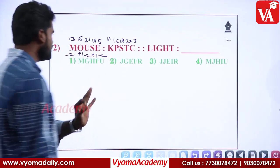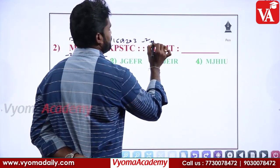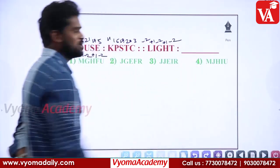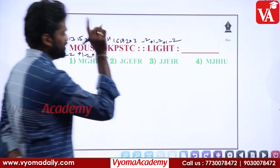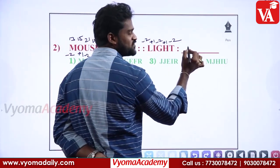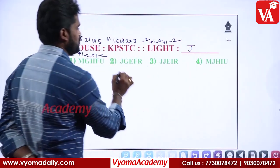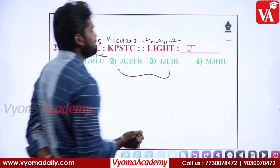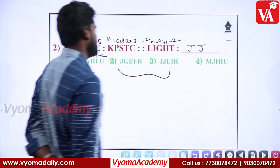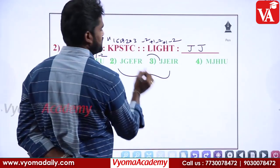The same relation applies throughout: minus 2, plus 1, minus 2, plus 1, minus 2. Applying this: L is 12, L minus 2 is 10, which is J. Next, I plus 1 is also J. So the answer starts with two J's — answer is JJ, that option.